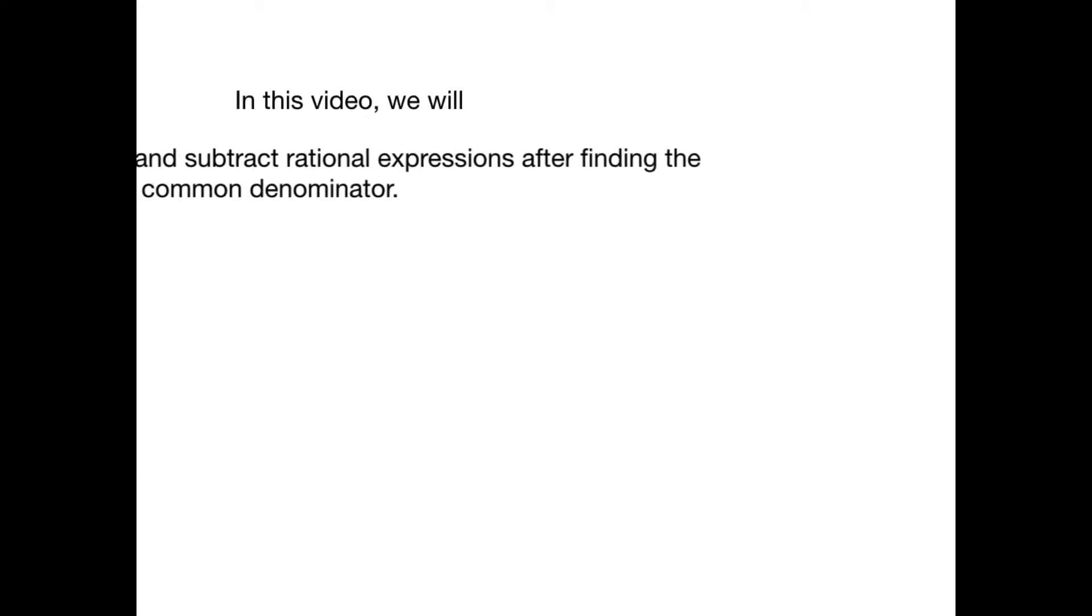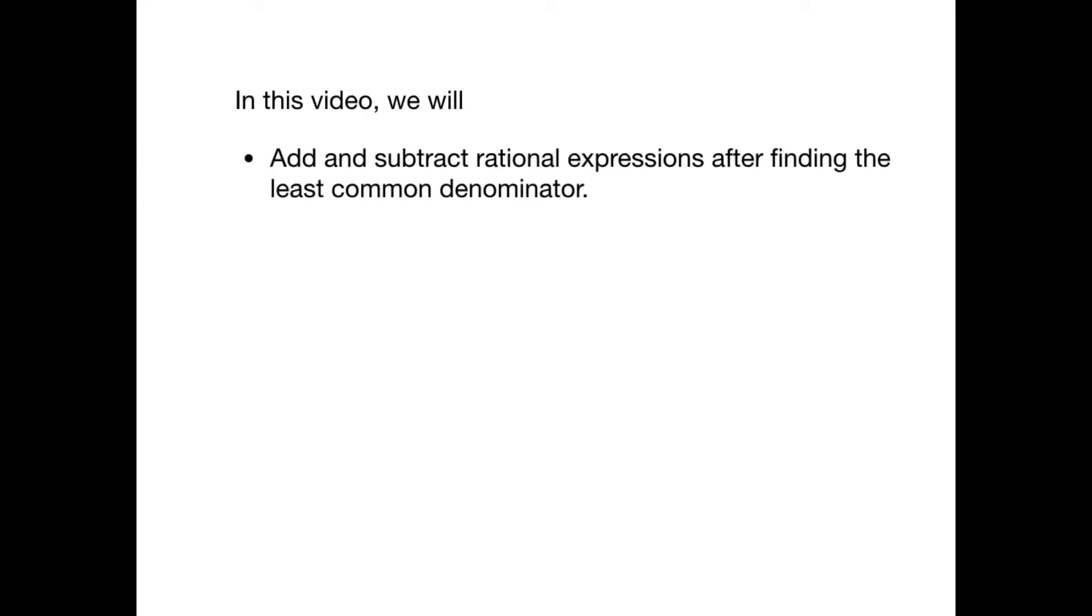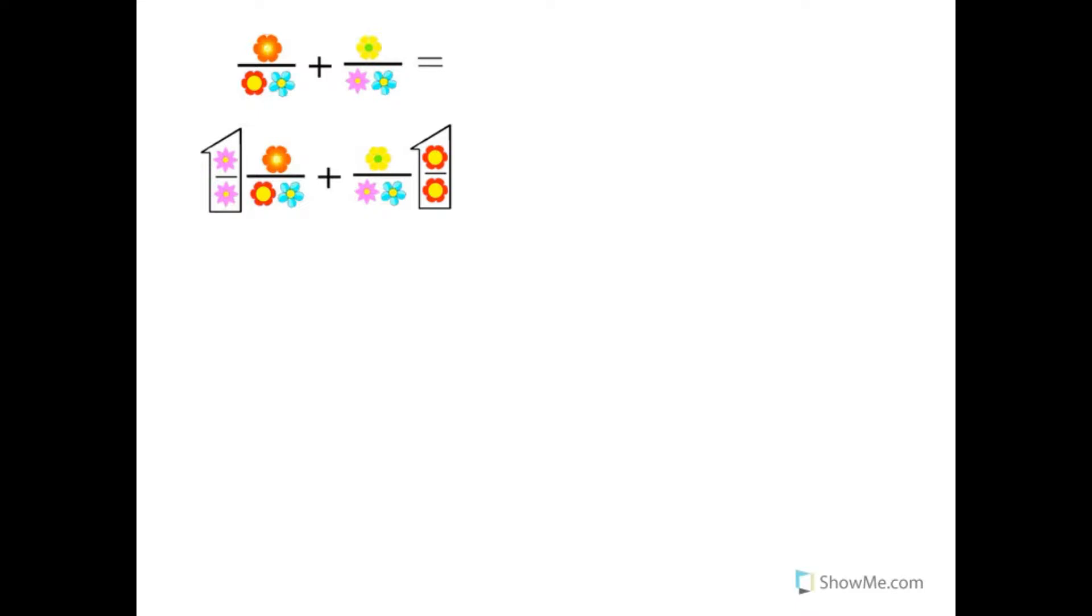In this video, we'll add and subtract rational expressions after finding the least common denominator. We saw at the end of the last video that to find a common denominator for fractions or for rational expressions, one method is to factor the two denominators and then give to each denominator any factors that it doesn't have.